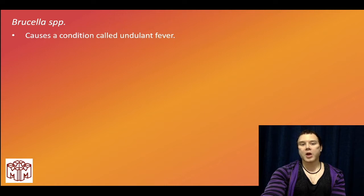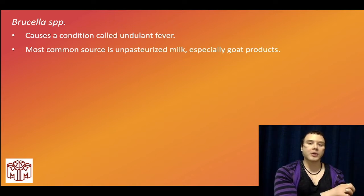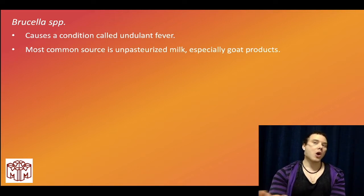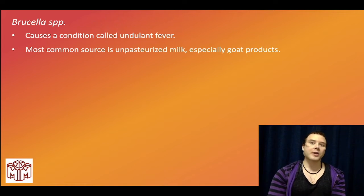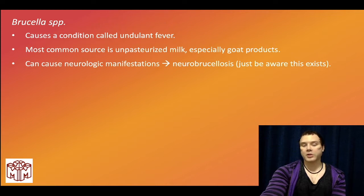Brucella causes a condition called undulant fever — like an oscillatory fever. The association is unpasteurized milk or goat products. So: Francisella tularensis is pneumonia with rabbits, and Brucella is associated with goat products and unpasteurized milk causing undulant fever. Brucella can also cause neurobrucellosis.